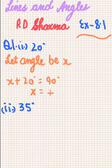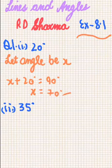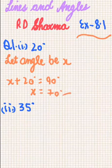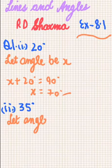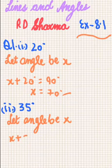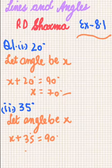There is another method which is very simple. You can just subtract 20 from 90, which also gives 70 degrees. For the second part, 35 degrees — let the angle be x. So x plus 35 equals 90, which gives x equal to 55 degrees.